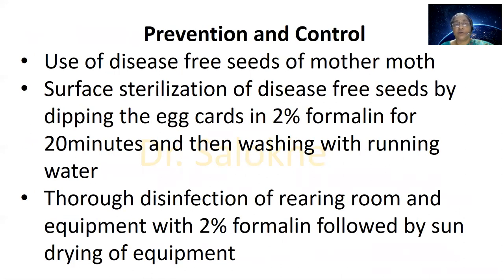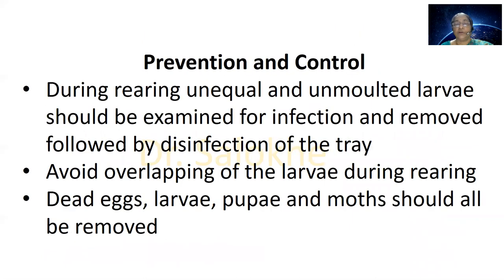Prevention and control measures for pebrine: use disease-free seeds of mother moth. Surface sterilization of disease-free seeds by dipping the egg cards in 2% formalin for 20 minutes, then washing with running water. Thorough disinfection of rearing room and equipment with 2% formalin, followed by sun drying of equipment. During rearing, unequal and unmolted larvae should be examined for infection and removed, followed by disinfection of the tray. Avoid overlapping of larvae during rearing. Dead eggs, larvae, pupae, and moths should all be removed from the culture.